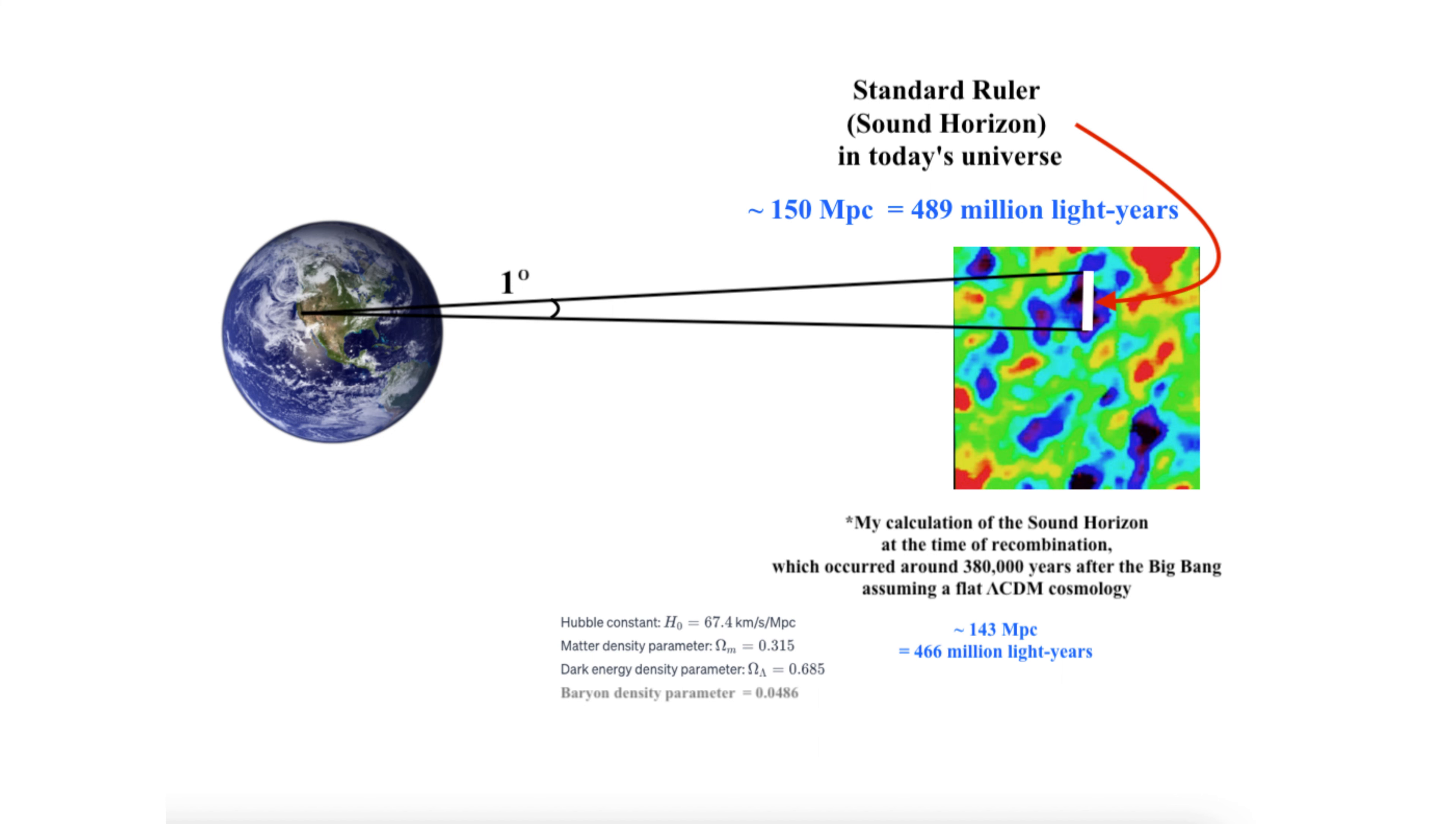A central feature of the microwave background fluctuations are randomly spaced spots with an apparent size of one degree across. By comparing the apparent size of the spot, which is about one degree, to their known actual size at the time of recombination, we can determine the geometry uniquely.